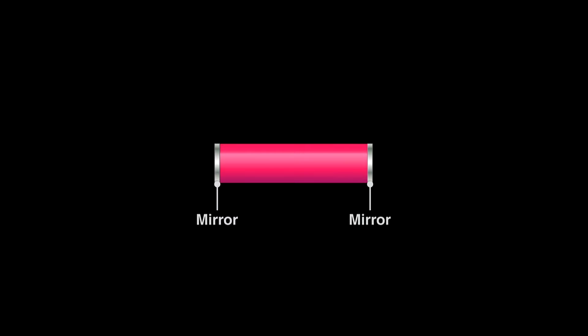Maiman silvered the ends to reflect the light within the ruby cylinder. He made the two ends of the rod astonishingly parallel to each other. From top to bottom, the distance between these two mirrors differs by no more than 200 nanometers.